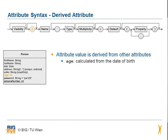The second optional step is to show that the attribute is derived from other attributes. In this case you draw a slash in front of the name of the attribute.